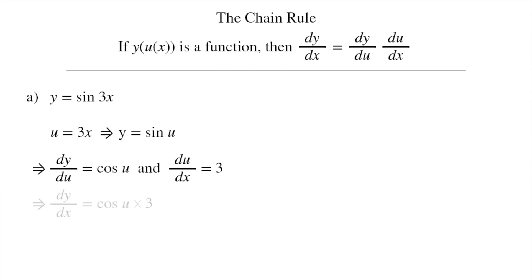Hence, dy/dx is equal to cos(u) times 3. Once we have calculated the derivative, it is important we change the temporary variable u we introduced back to the original variable x. So this equals 3cos(3x).